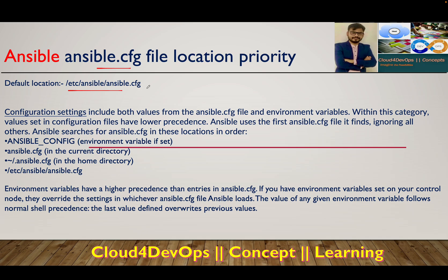We have covered all those concepts in our previous lectures. In this lecture, I want to make you understand that you can work from different locations within the controller engine, and that is actually an advisable approach. For example, if you are working in a production environment with a team of five or six members, each working with their own set of servers, but you only have one controller engine, working from the default location will create a conflict.